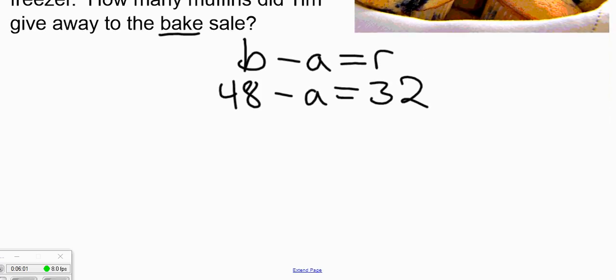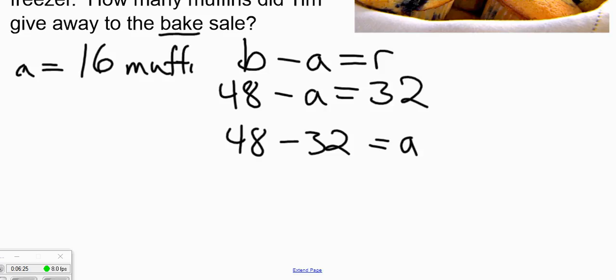Then we go to our fact families and we look at this and say, okay, how do we rearrange this to get A alone? In the end, we're going to start with our bigger number, subtract a smaller number, and get what went to the bake sale. So we're going to come away with an answer of A equals 16, or 16 muffins.